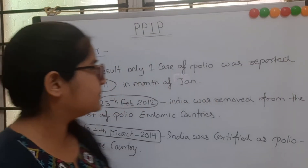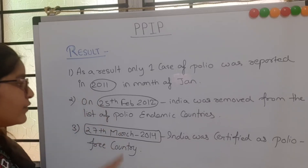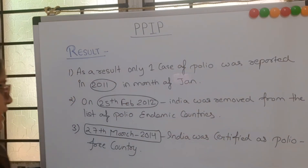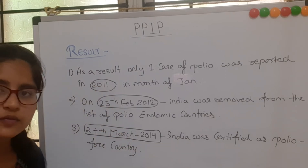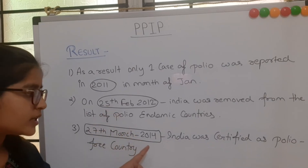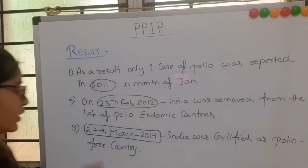Finally, the results: only one case of polio was reported in January 2011. On 25th February 2012, India was removed from the list of polio endemic countries. And on 27th March 2014 — one of the most important days for our country — India was certified as a polio-free country.